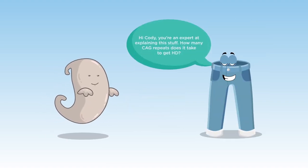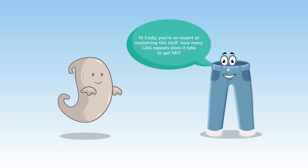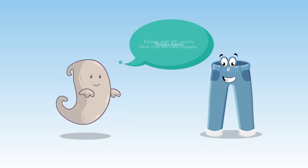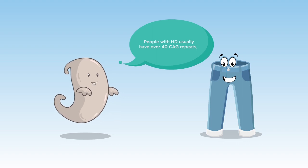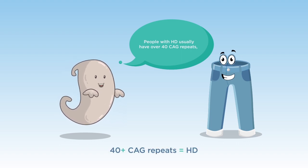Everyone has a CAG repeat on this gene, usually about 16 or 17 repeats, but people with HD have more repeats than usual. Thanks, Gene. Hi, Cody. You're an expert at explaining this. How many CAG repeats does it take to get HD? Thanks, Gene. People with HD usually have over 40 CAG repeats, but there are actually four ranges that CAG repeats may fall into.